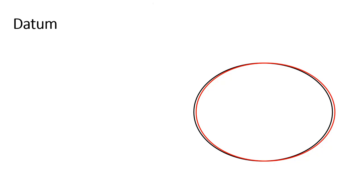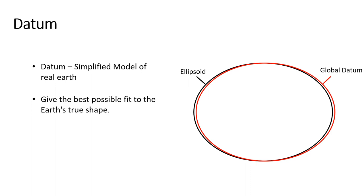The earth is shaped like a flattened sphere. This shape is called an ellipsoid. A datum is a model of the earth that is used in mapping. It defines the origin and orientation of latitude and longitude lines. A datum is chosen to give the best possible fit to the true shape of the earth.